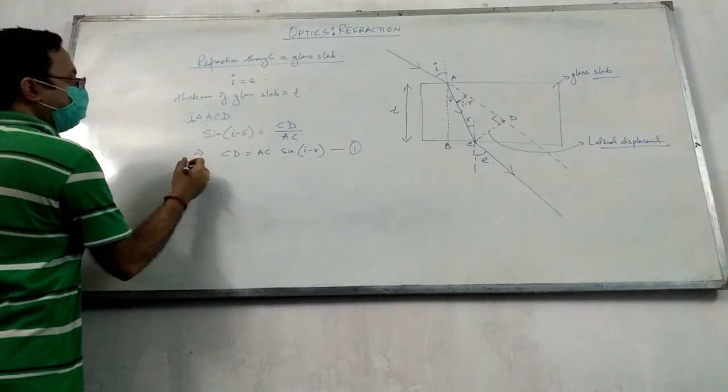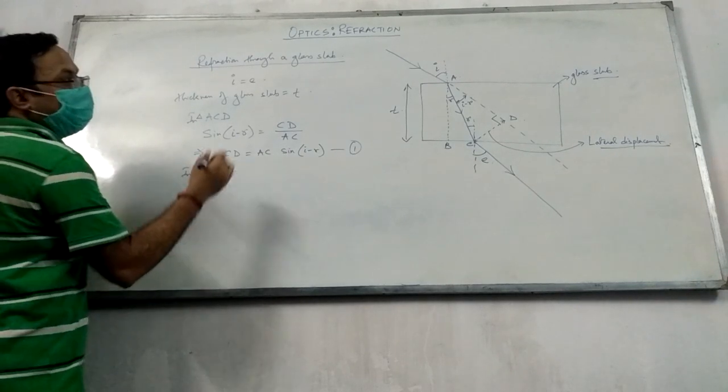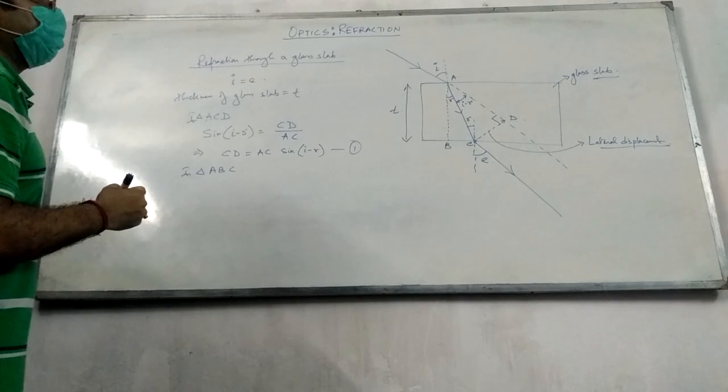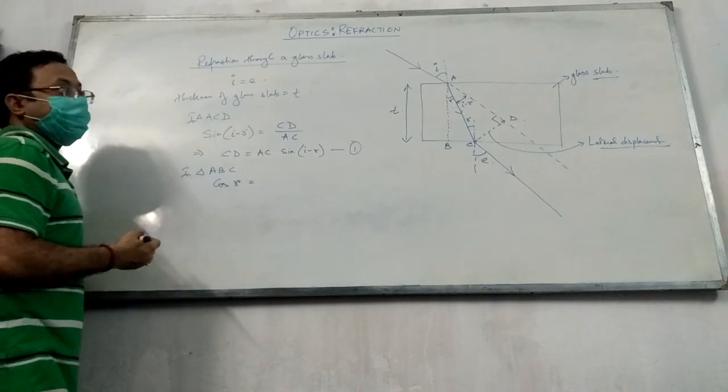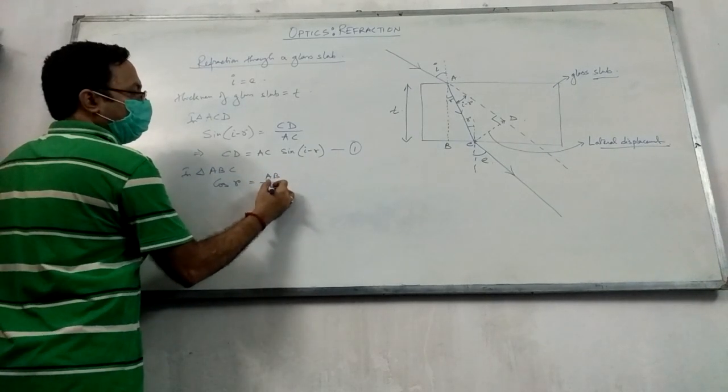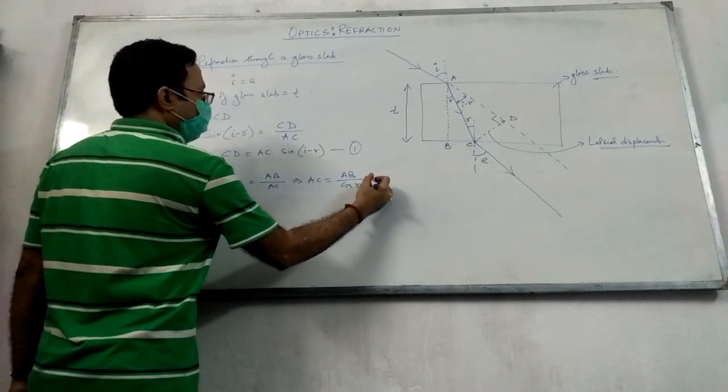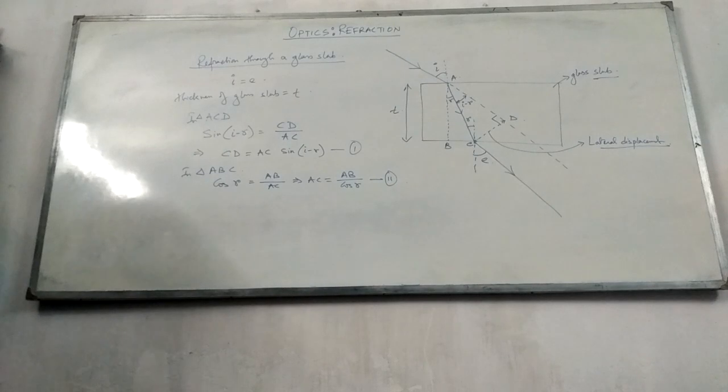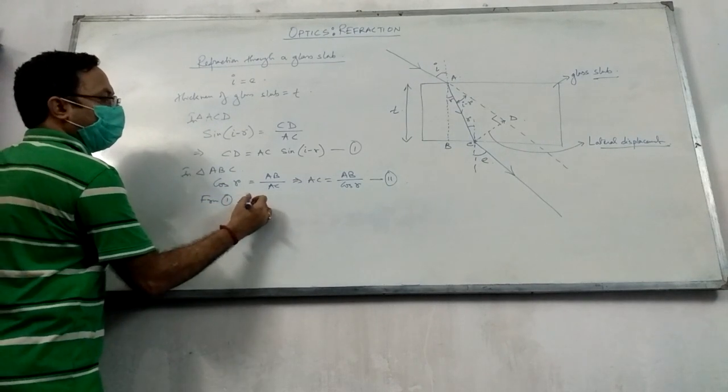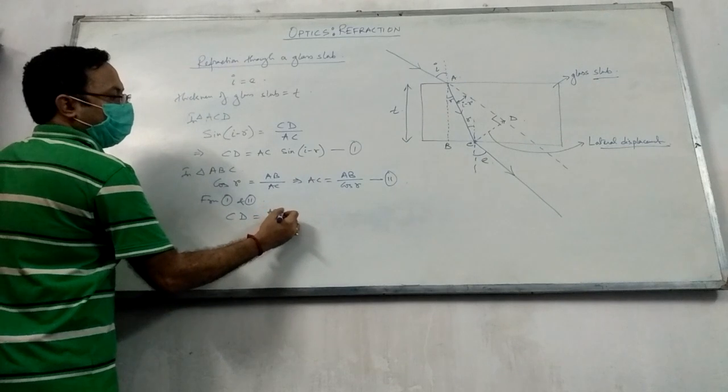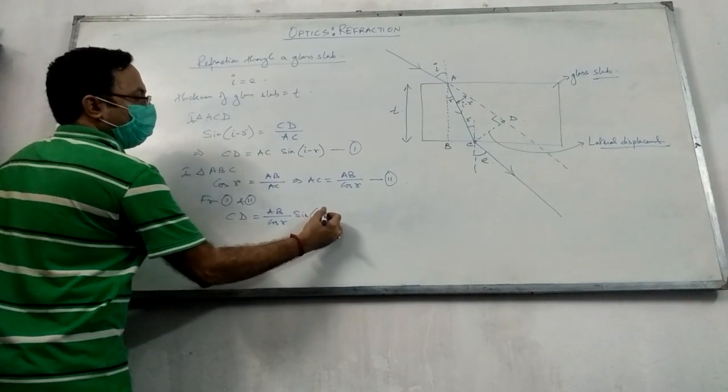Now tell me, which triangle is ABC? This is ABC triangle. We need AC with AB. So what do you want to tell? How about AC? AB by cos r. So we can write AC as AB by cos r. Can I? Now if we substitute this AC value in the first equation, from 1 and 2, CD equal to AB by cos r equal to sin of i minus r.